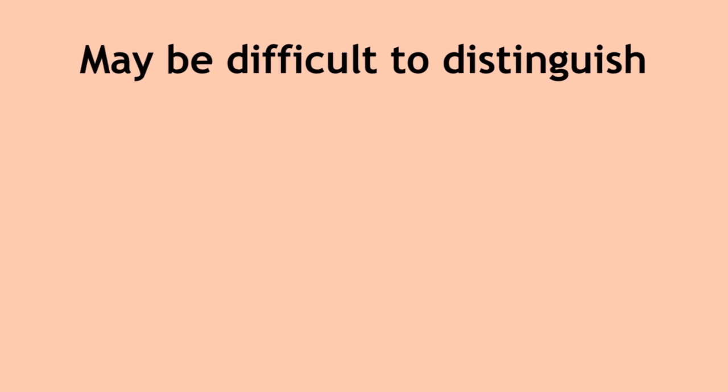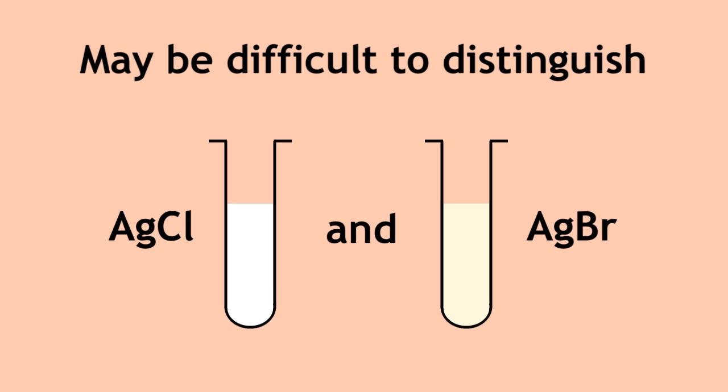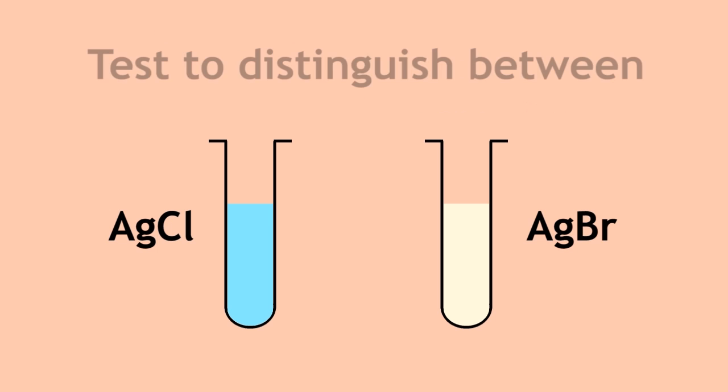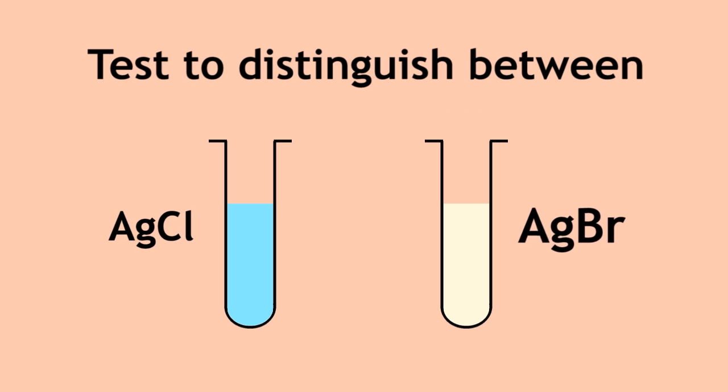It may be difficult to distinguish between the white silver chloride precipitate and cream silver bromide precipitate. Add dilute aqueous ammonia. Dilute aqueous ammonia dissolves silver chloride, but not silver bromide. Therefore, this test is used to distinguish between silver chloride and silver bromide.